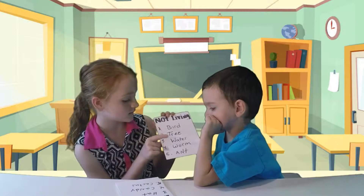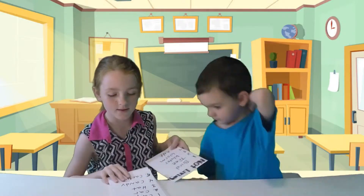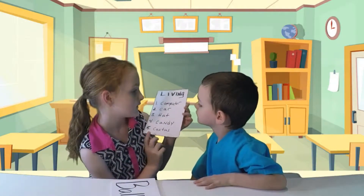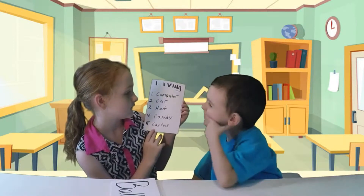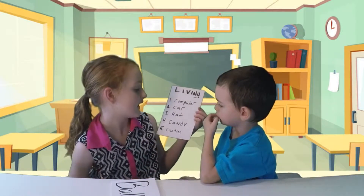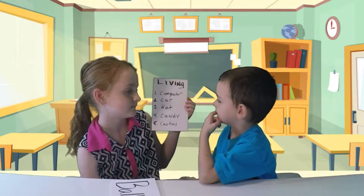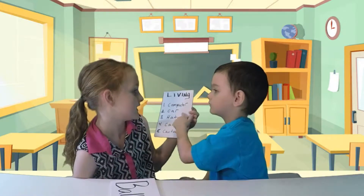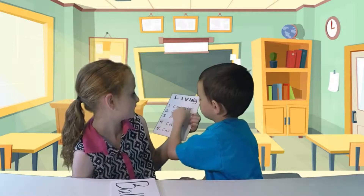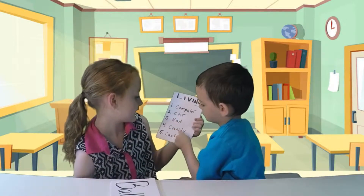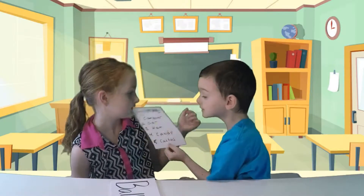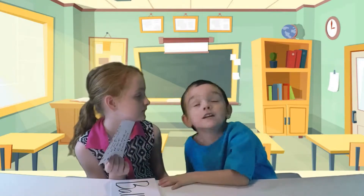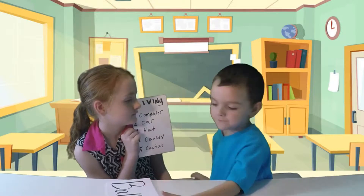A bird is living, a tree is living, and an ant is living. Now I want you to find the living thing: a computer, a car, a hat, candy, or a cactus. A car? A computer? No — the cactus is living! How do you know? It's easy — I'm a master.